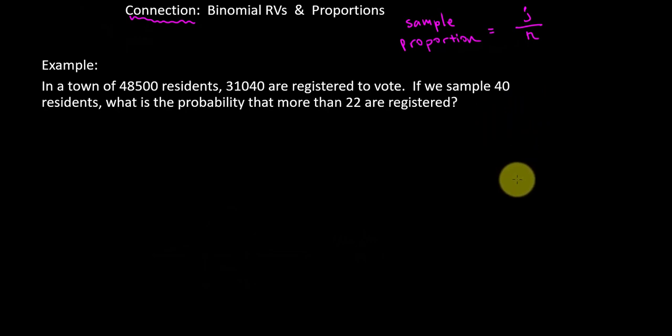So here we've got a binary situation. We've got our sample size n, which is 40. And we've got the probability, the event probability, of someone being registered to vote. It wasn't given to us as a direct percentage, but we do know the number of successes out of the population size. So our probability that someone is registered to vote would just be the ratio of those two numbers. And I believe that comes out to 0.64.